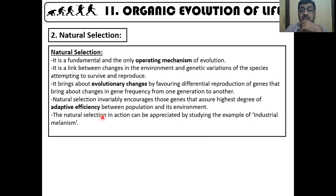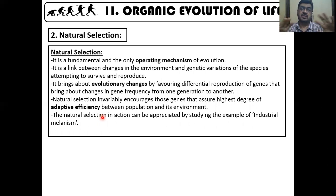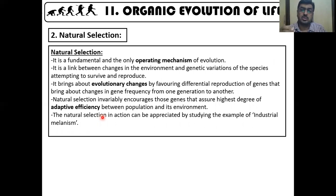The second point in Modern Synthetic Theory is natural selection, borrowed from Darwin. Natural selection is the only operating mechanism — only those organisms that can survive will be selected. To explain this point, they give the example of industrial melanism.